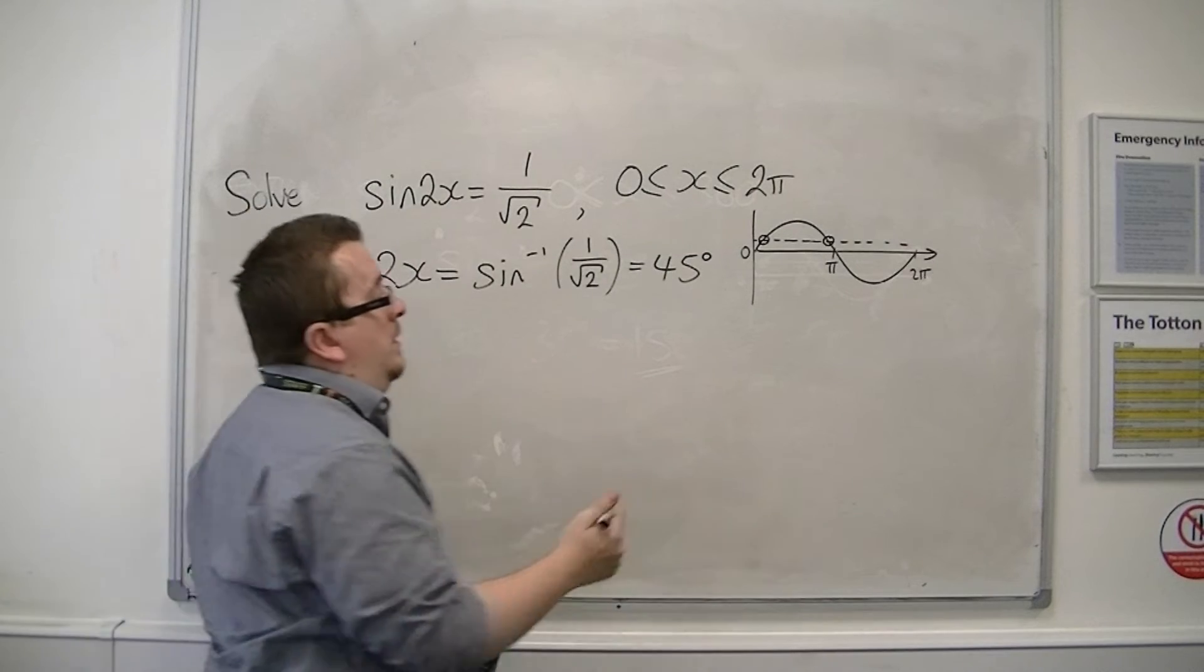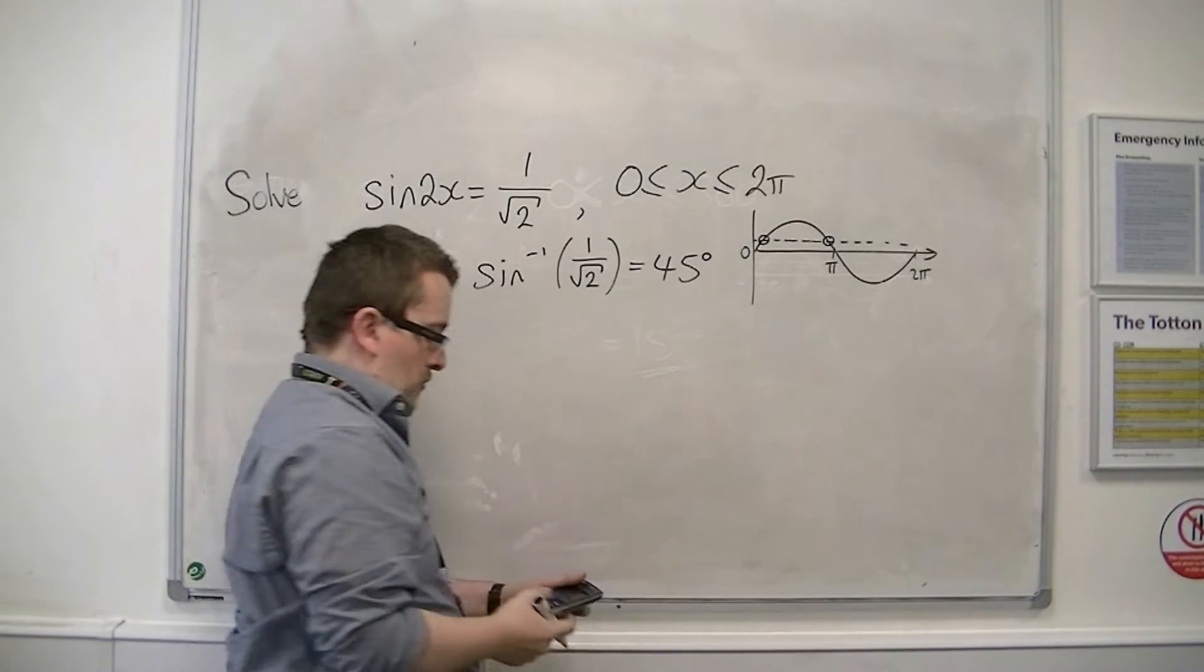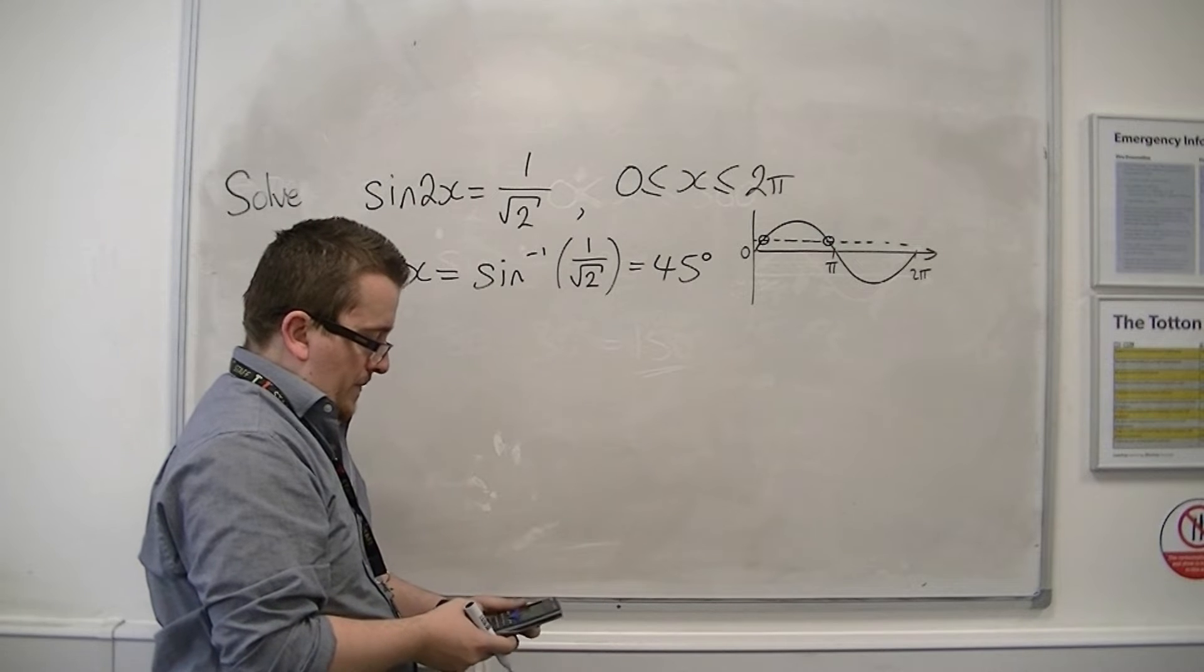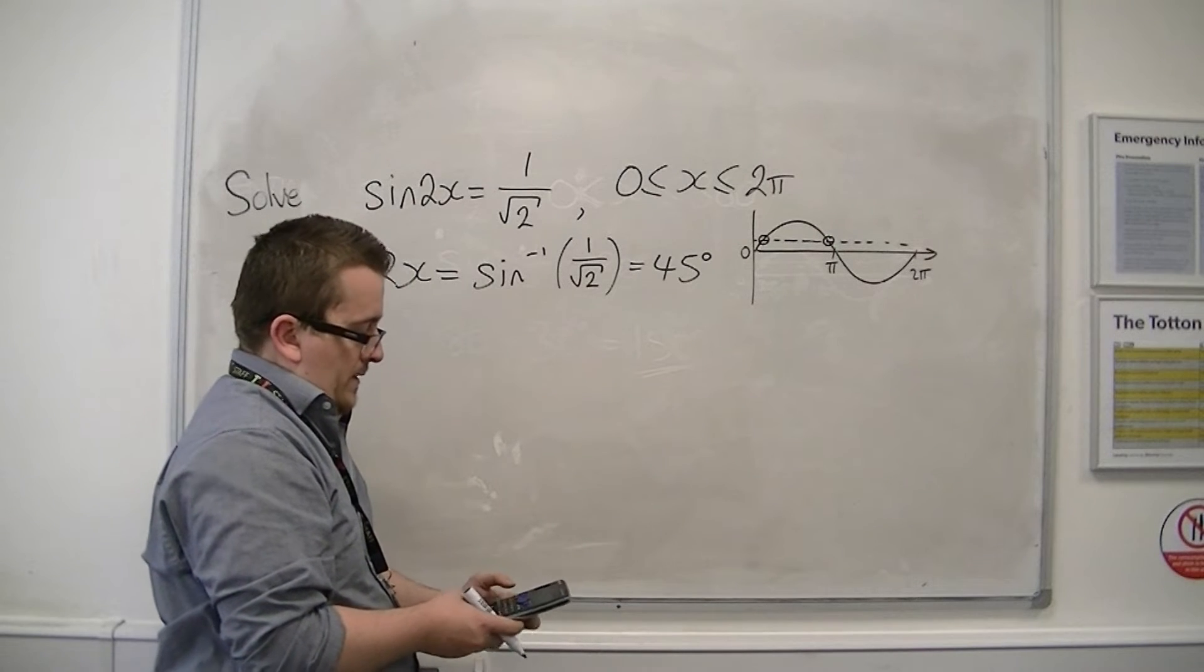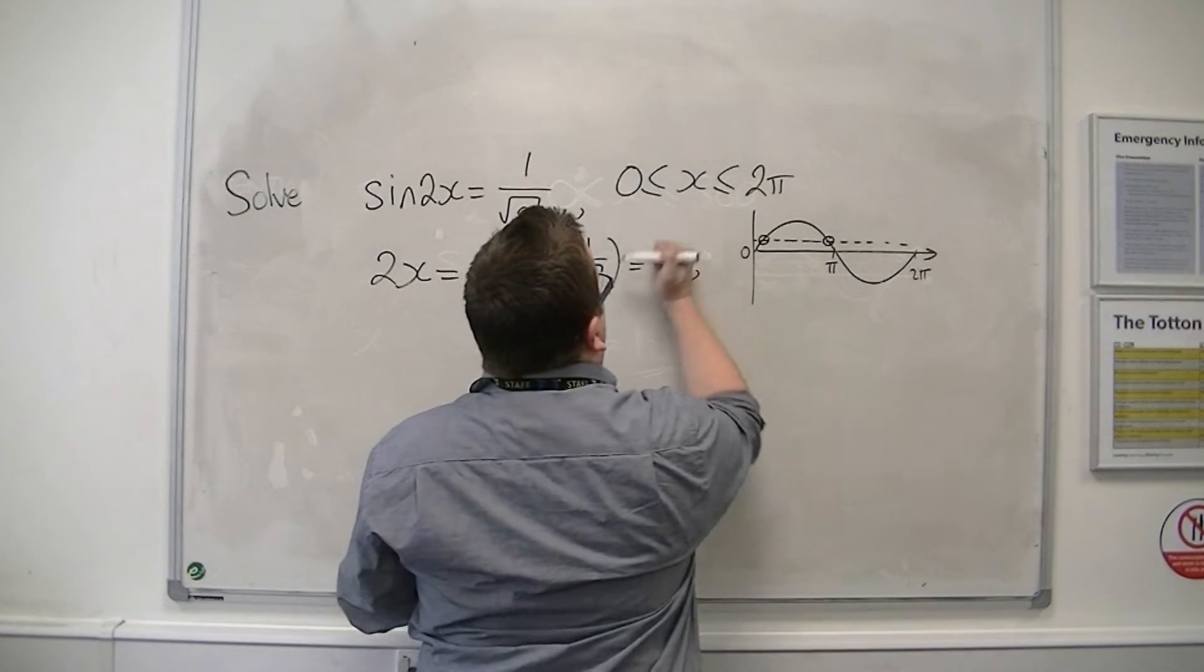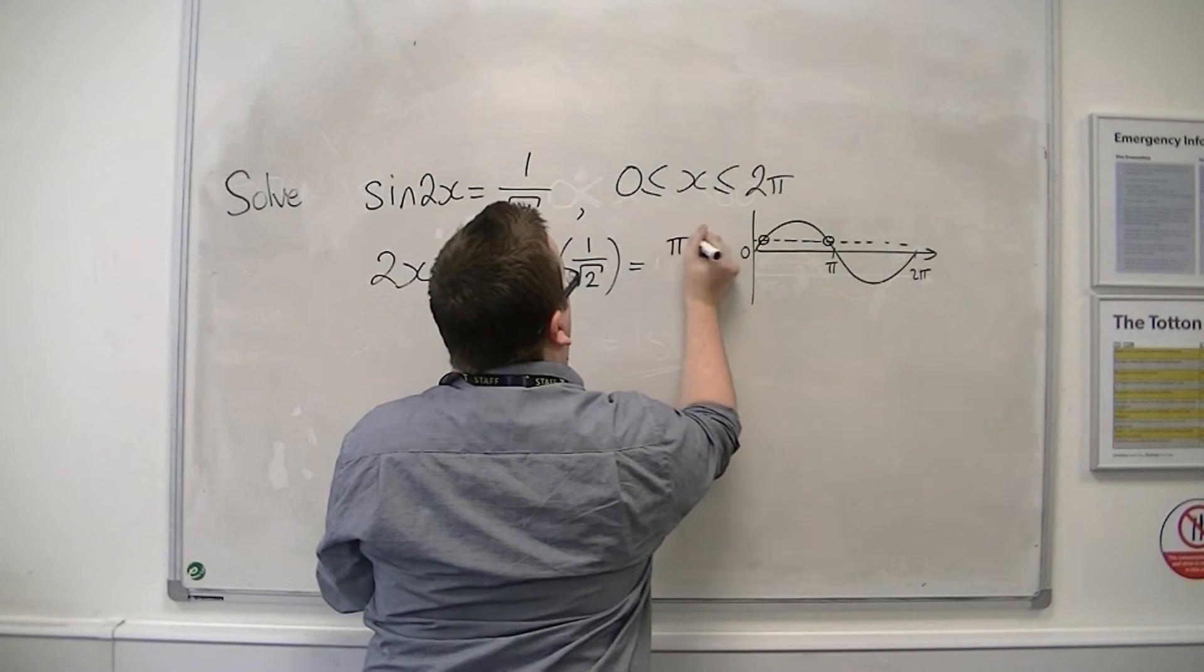Now, as in the first example, that... Oh sorry, I'm in degrees. I should be in radians. So let's turn to radians. Inverse sin of 1 over root 2 is pi over 4, sorry, or 1 quarter pi.